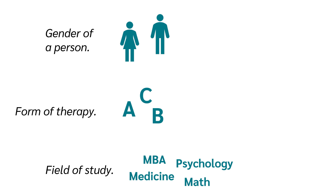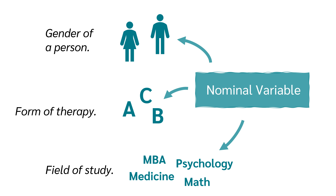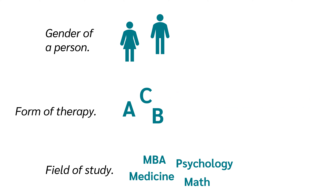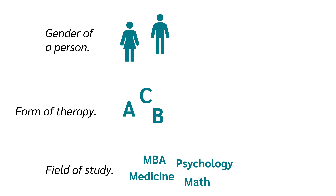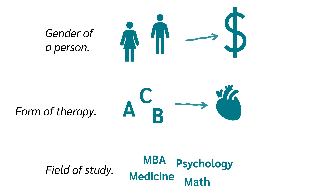In an analysis of variance, a factor is a nominal variable. We use ANOVA whenever we want to test whether these levels have an influence on the dependent variable — for example, whether gender has an effect on salary, whether therapy has an effect on blood pressure, or whether field of study has an effect on length of study.